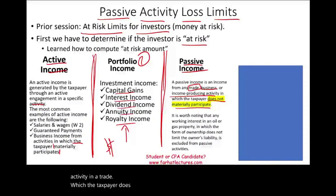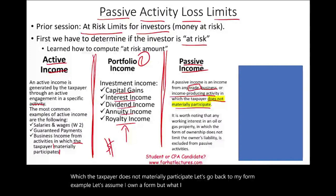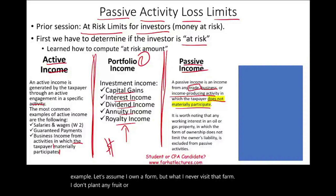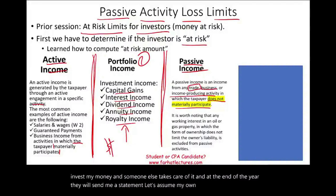Let's go back to the farm example. Let's assume I own a farm, but I never visit it. I don't plant any fruit or vegetables or plow the land. I just invest my money and someone else takes care of it. At the end of the year, they send me a statement. Let's assume I own 20% — they'll allocate 20% of the profit or the loss to my account. So I am a passive investor here. I don't participate, so my income is passive, not active.